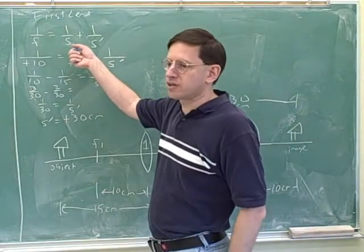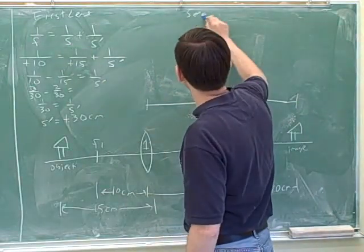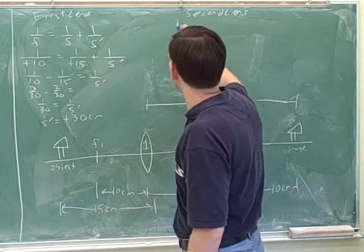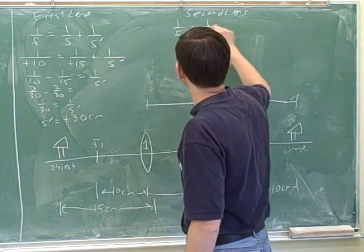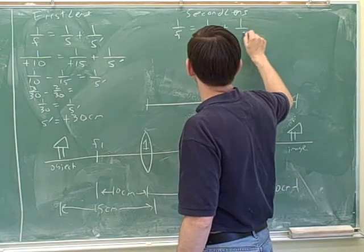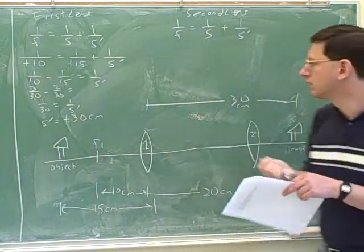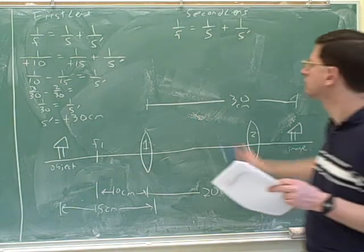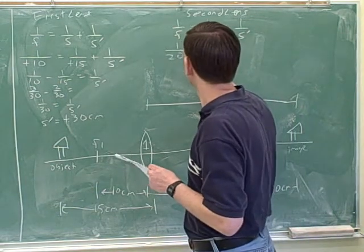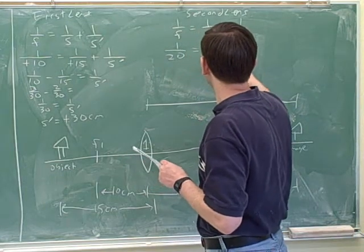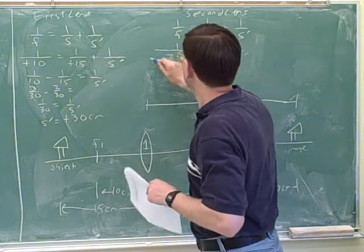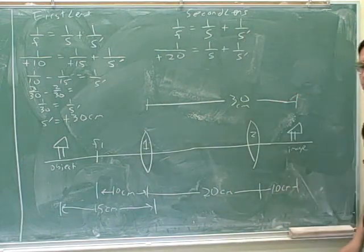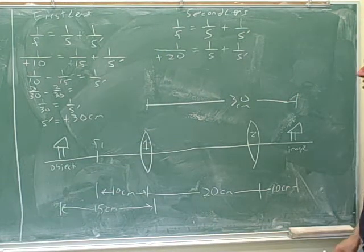We've just used the lens mirror equation for the first lens. The logical thing now is to use the lens mirror equation for the second lens. What should we plug in for f? We should always put in a sign. How do we know this is positive? Because it's a converging lens — because they told us. So that's good to put in.